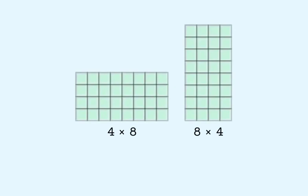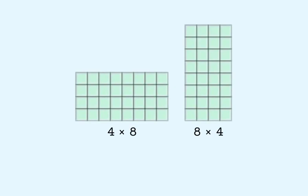Let's look at another example: 4 times 8 and 8 times 4. We can see that the array that represents 4 times 8 is equal to the array that represents 8 times 4. It's just rotated.